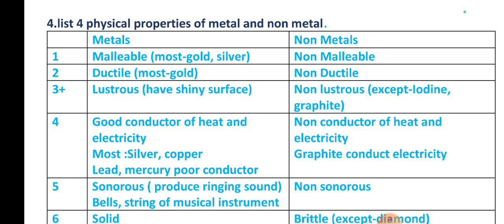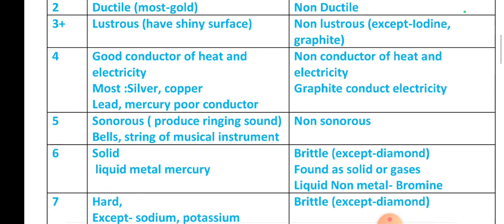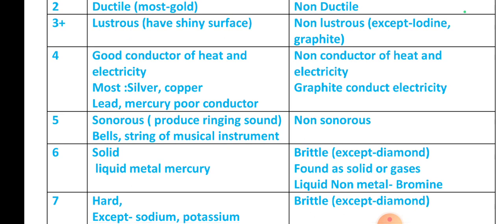Metals are good conductors of heat and electricity. Non-metals are non-conductors of heat and electricity. There is an exception — graphite is a good conductor of electricity. Among metals, the best conductors are silver and copper, while lead and mercury are poor conductors.